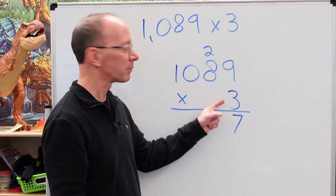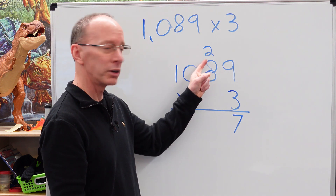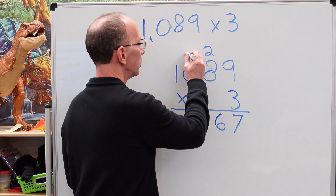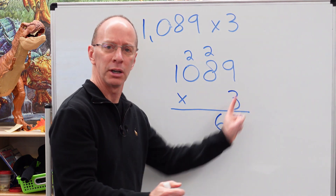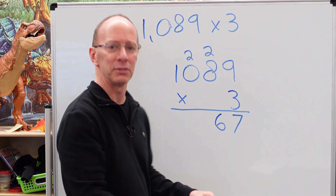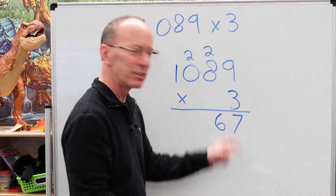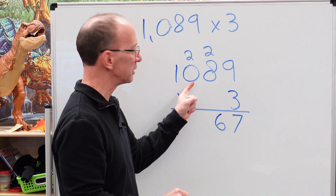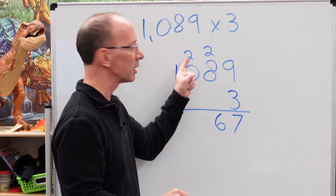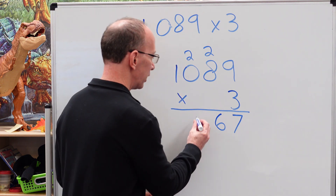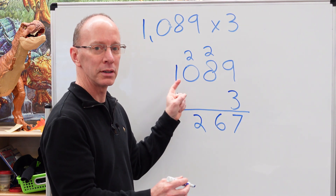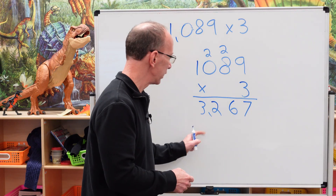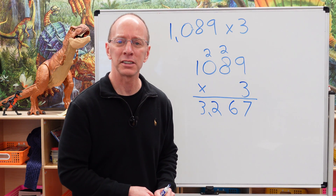Next step: 3 times 8 is 24, plus the 2 is 26 — put the 6 right here and the 2 up there. Make sure you've got those numbers straight; write neat. 3 times 0 is 0, plus the 2 — just bring that 2 right down. 3 times 1 is 3. Go ahead and put that comma. So the answer is 3,267.